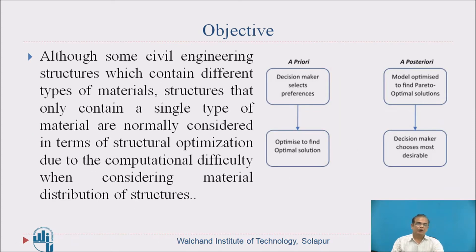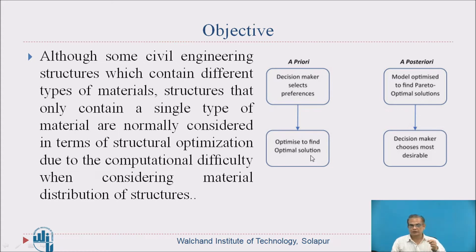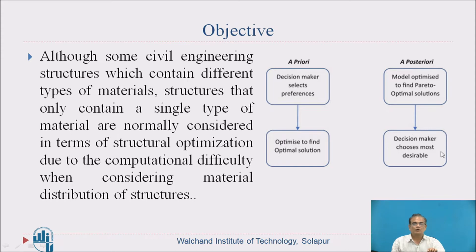Although some civil engineering structures contain different types of materials, structures that contain only a single type of material are normally considered in terms of structural optimization, due to the computational difficulty when considering material distribution. In the first case, a priori decision maker selects preferences and optimizes to find the optimal solution. In the second case, a proposed priori model is optimized to find a pre-optimal solution, and the decision maker chooses the most desirable one.